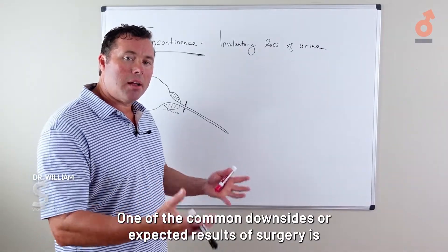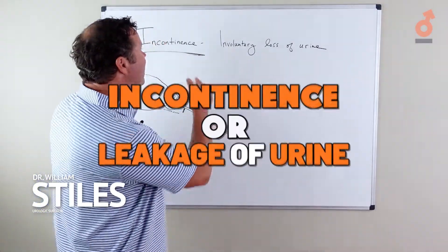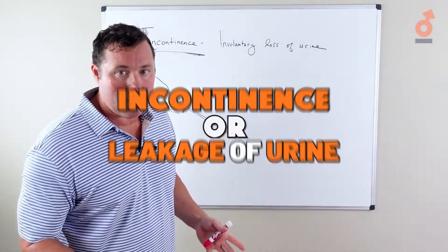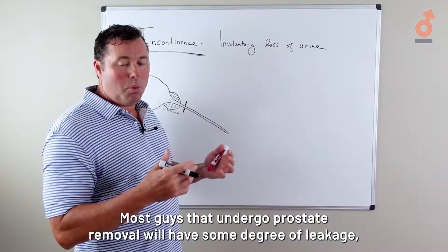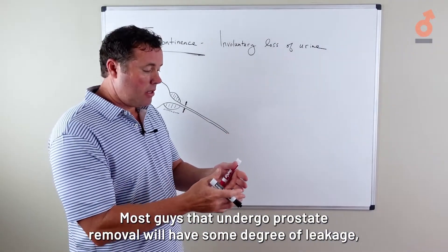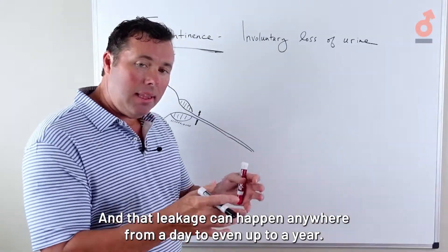One of the common downsides or expected results of surgery is incontinence or leakage of urine. Most guys that undergo prostate removal will have some degree of leakage, especially early on after their catheter is removed, and that leakage can happen anywhere from a day to even up to a year.